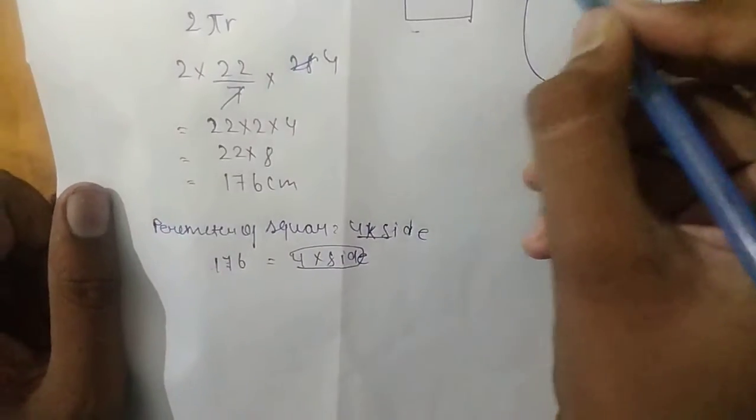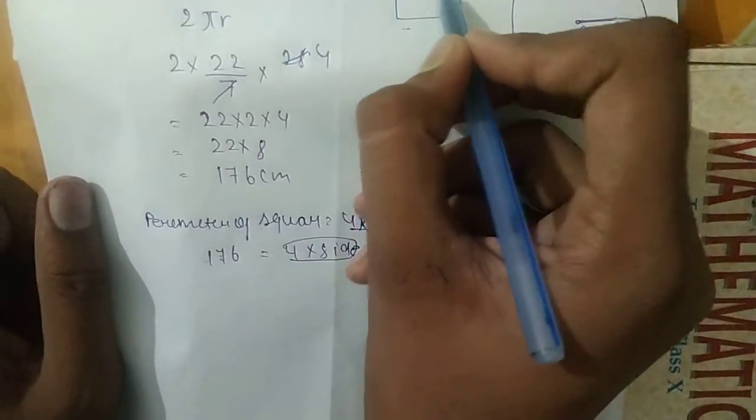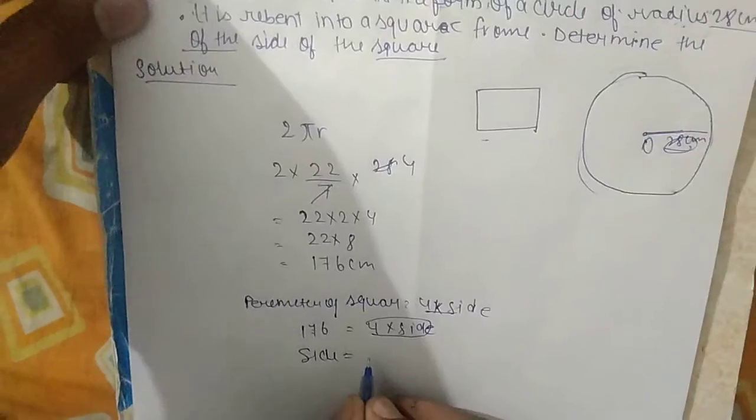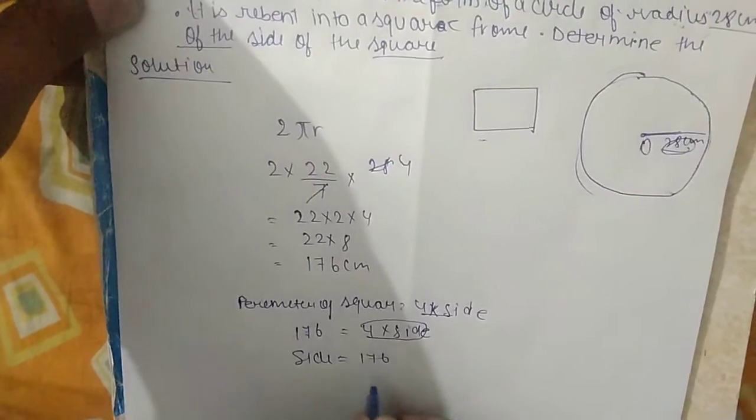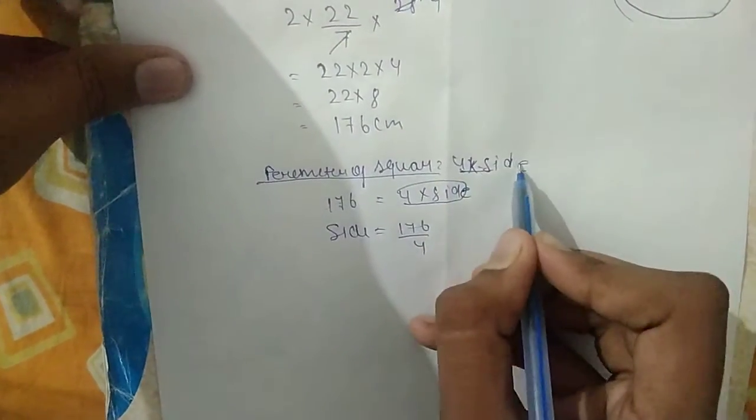This is the perimeter of the square. How much is it? 4 into a side.